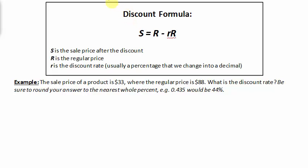In this example, we'll be using the discount formula to find the discount rate R. Recall that the discount rate is usually given as a percentage that we change into a decimal. So we will obtain a decimal which we'll change to a percentage in the very end.